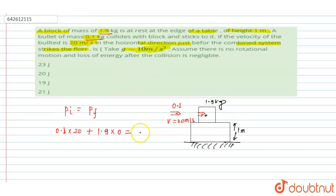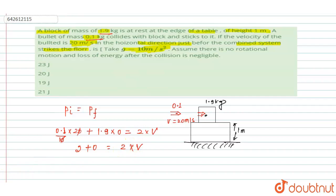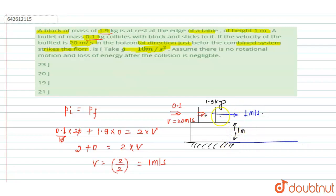So (m1 + m2) × v = 2 × v. Solving: 2 + 0 = 2v, giving the combined velocity v = 2/2 = 1 meter per second. The block and bullet together move with 1 meter per second horizontally.